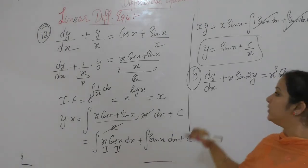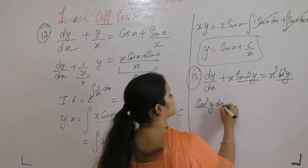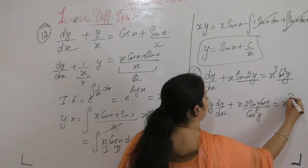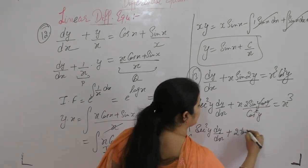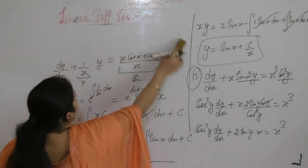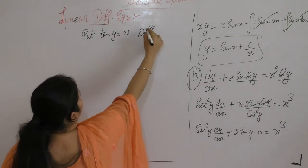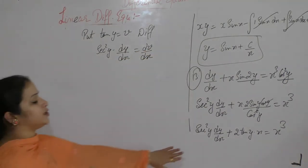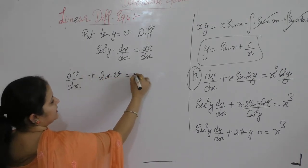Here we have y in terms of sine and cos. First divide by cos²(y): sec²(y) dy/dx plus sin(2y)/cos²(y) · x = x³. Since sin(2y) = 2·sin(y)·cos(y), we get sin(2y)/cos²(y) = 2·tan(y). So the equation becomes sec²(y) dy/dx + 2x·tan(y) = x³. Now put tan(y) = v; differentiating gives sec²(y) dy/dx = dv/dx. The equation becomes dv/dx + 2x·v = x³.